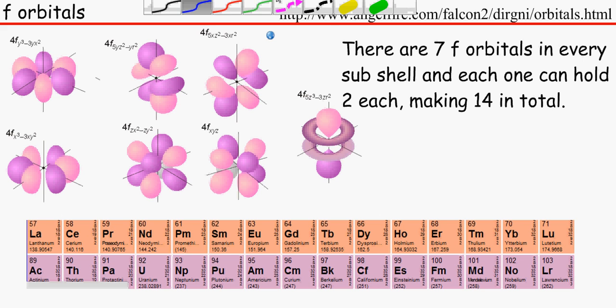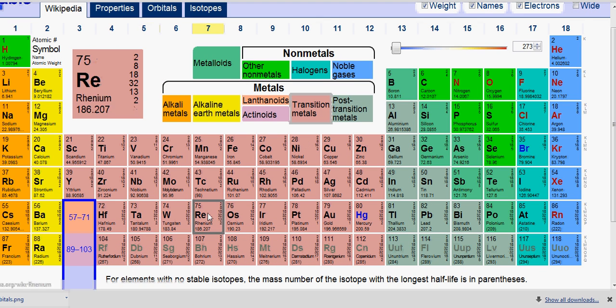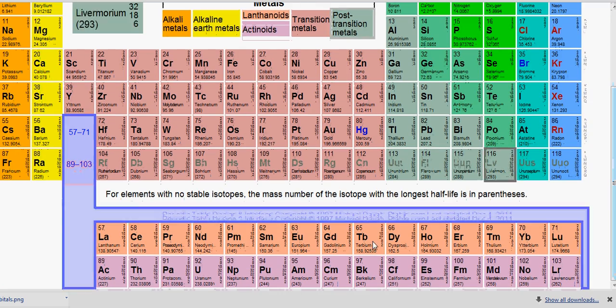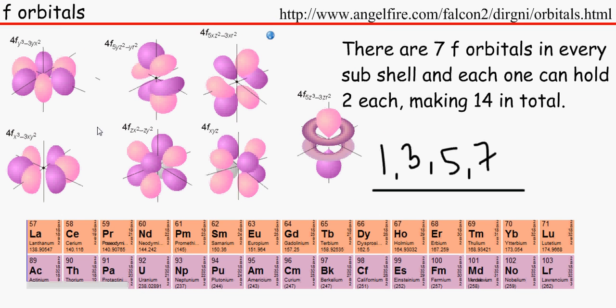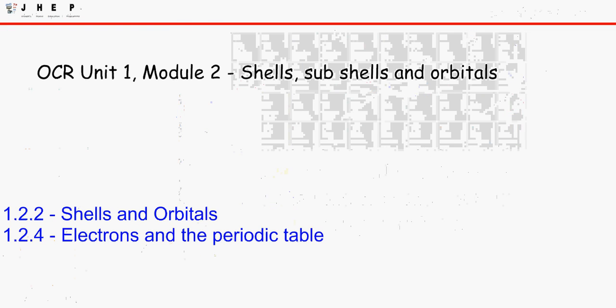So to recap, S orbitals have 1 orbital in every subshell. A P orbital has 3 orbitals in a subshell. D orbitals 5 and F orbitals 7. Can you see the pattern here? 1, 3, 5, 7. Easy way of remembering it. And by the way, these are all of these. The ones at the bottom, the ones which are lonely and have no place in the periodic table. That's why this is brought by itself. And that is it for shells, subshells and orbitals.